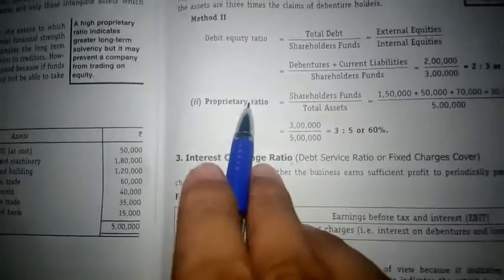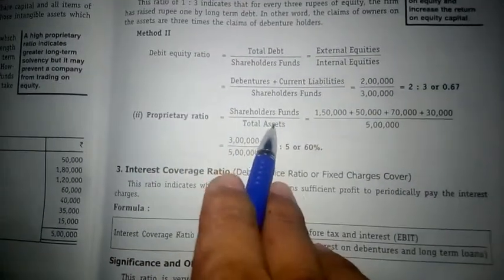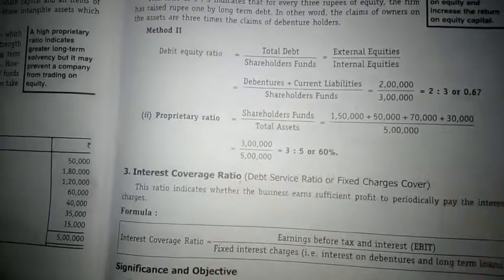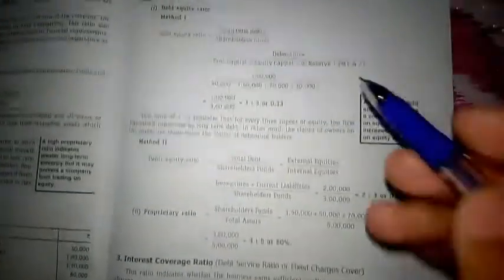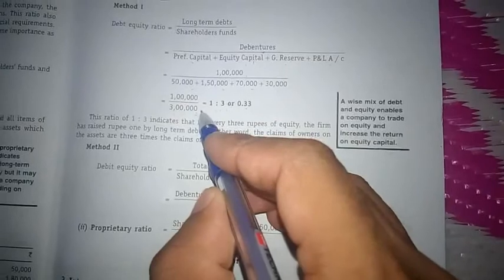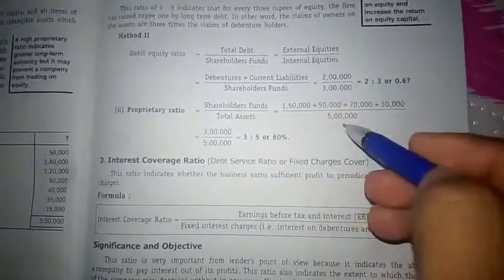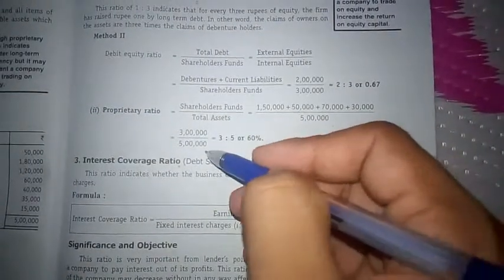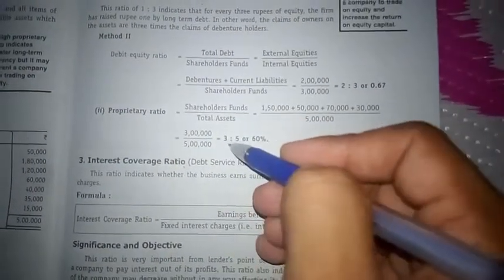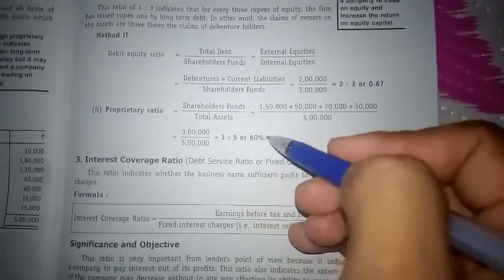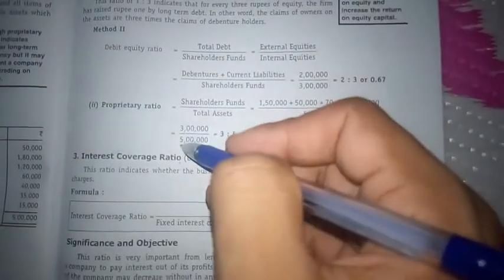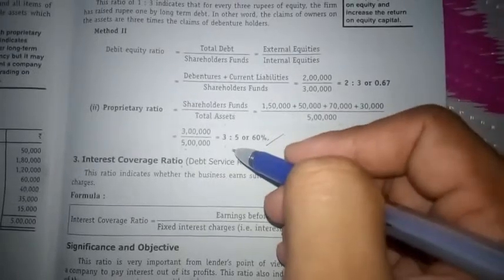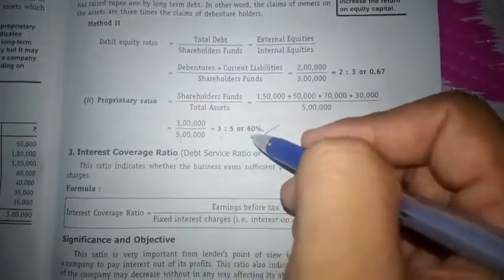Proprietary ratio equals shareholders fund divided by total assets. Shareholders fund is 3 lakh rupees and total assets is 5 lakh, so 3 lakh divided by 5 lakh equals 3 is to 5, or 60 percent. You can express this as 60 percent or as the ratio 3 is to 5.